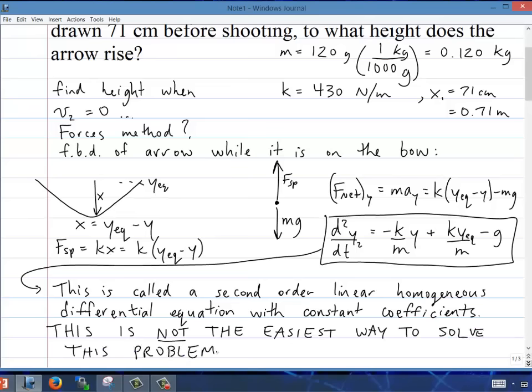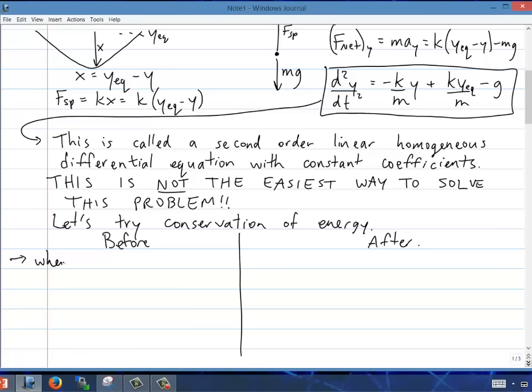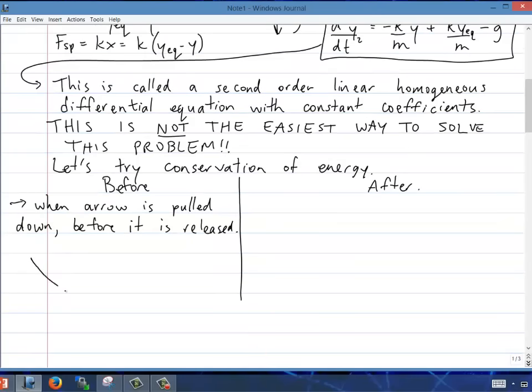You can do it, but better to just use conservation of energy. We're in Chapter 7, so let's do it. Let's set up before and after. We'll call before when the arrow is pulled all the way down, just before it is released up into the air. There's the little arrow. Its initial speed is actually zero, just before you release it. We know that it's stretched down 0.71 meters. We can define that to be the bottom, y1 = 0.